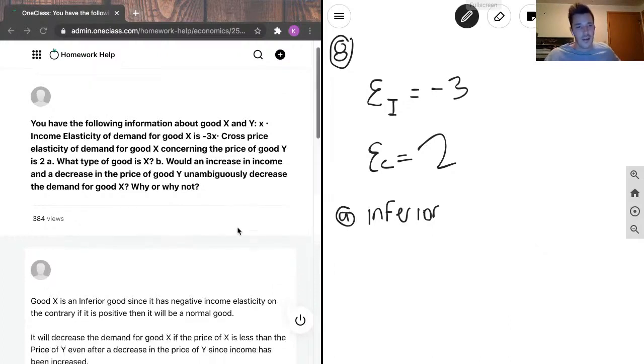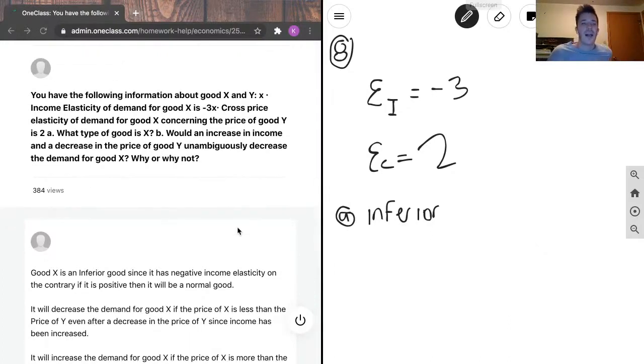So good X is an inferior good since it has negative income elasticity. On the contrary, if it's positive, then it would be a normal good. A normal good is when your income increases, so does your demand.